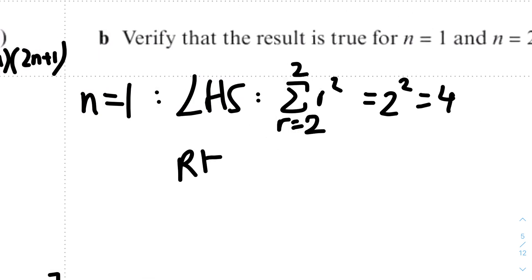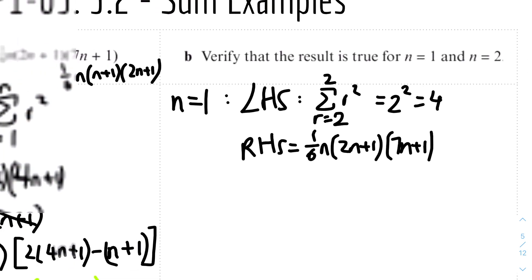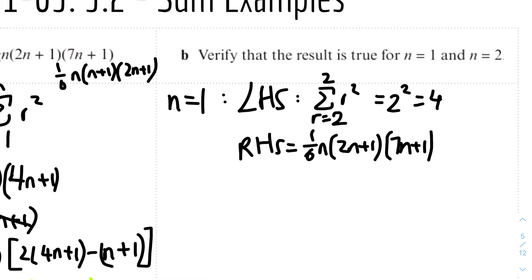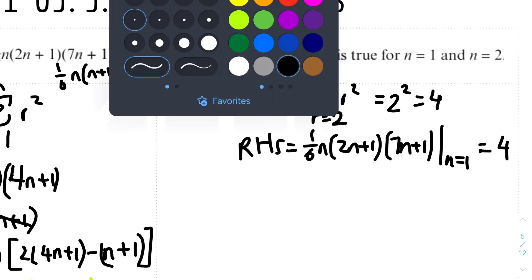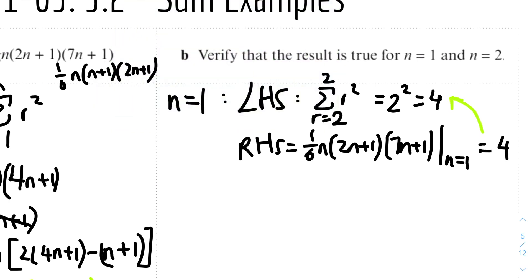For the right-hand side when n equals 1: one-sixth times 1 times (2(1)+1) times (7(1)+1) = one-sixth times 1 times 3 times 8 = 4. Both sides equal 4, so the result is verified for n equals 1.